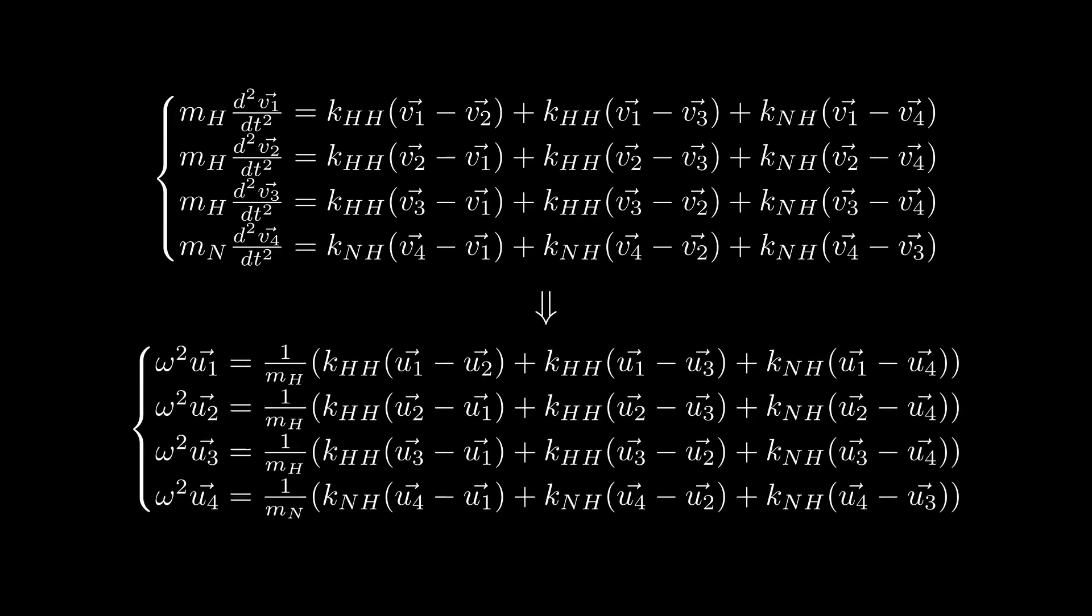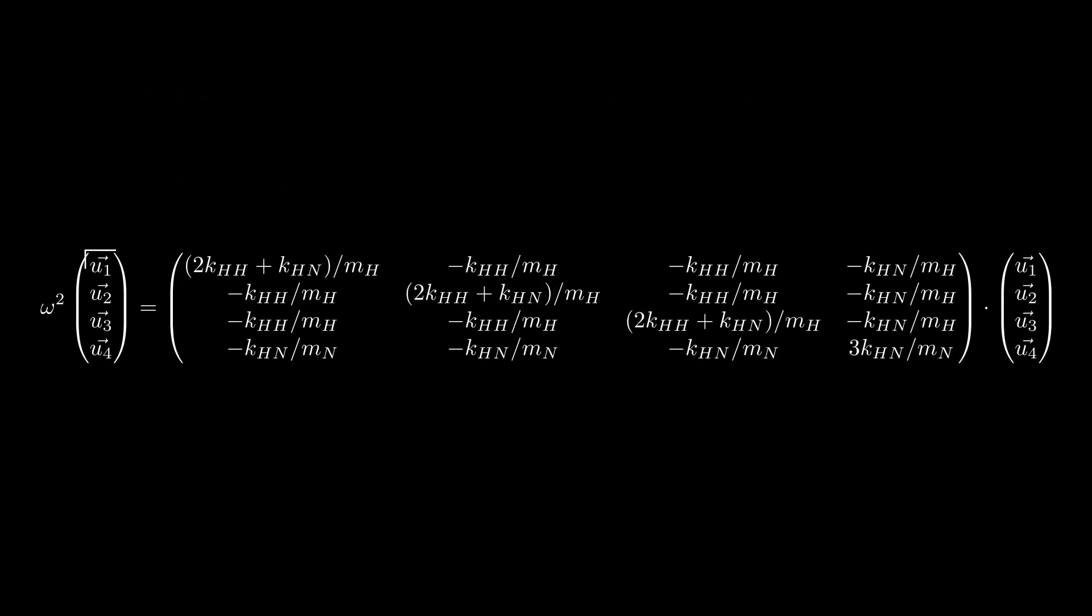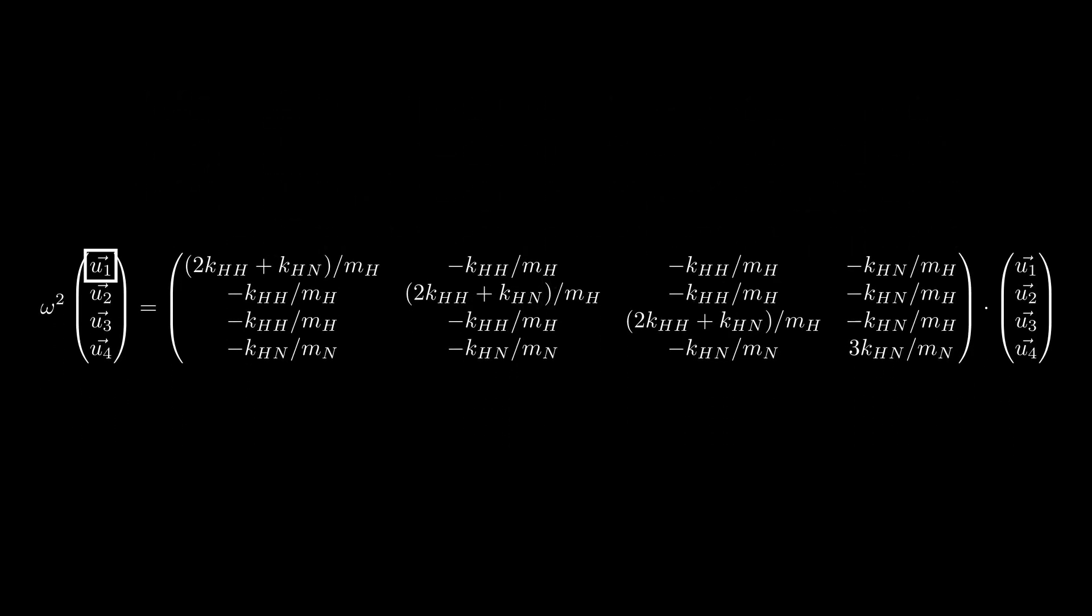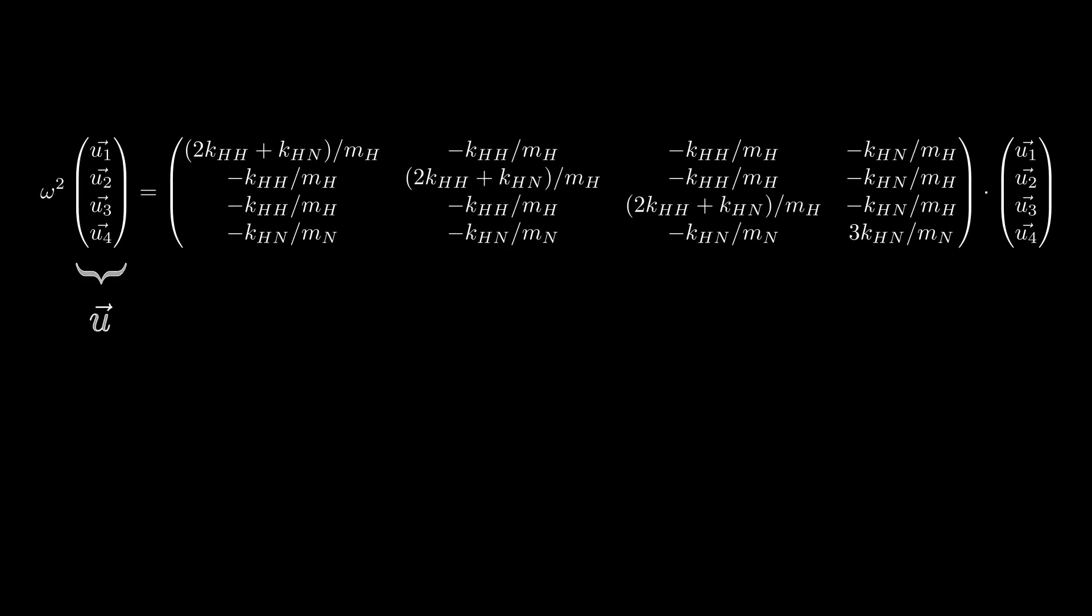If you look carefully to these equations, you see that they can be written in a matrix form, where for each atom I use the notation u_i as a vector element to encapsulate its three components. In the same way, each matrix element is in fact a 3 by 3 matrix. If we define by u the giant 12th row vector containing all displacement vectors, and by A the 12 by 12 matrix, we identify an eigenvalue problem.